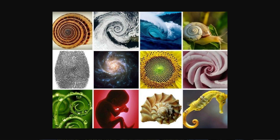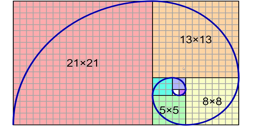Now let's talk about how we build this spiral. On this image we have different squares. The text here indicates the size of the square. So for example, for the pink square we have 21 small squares here and 21 small squares here.